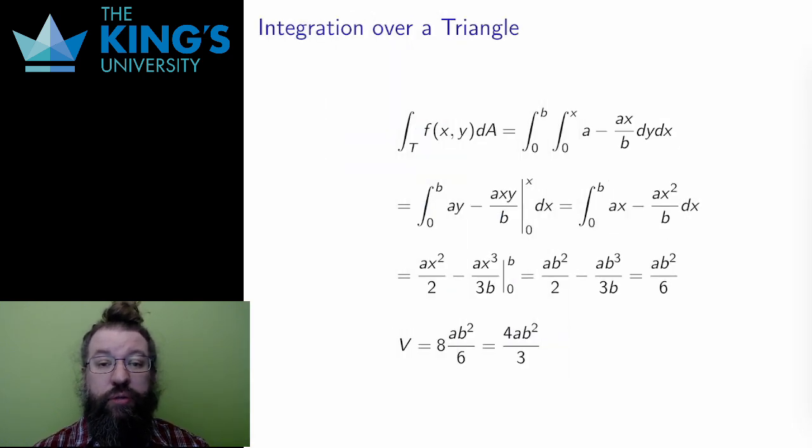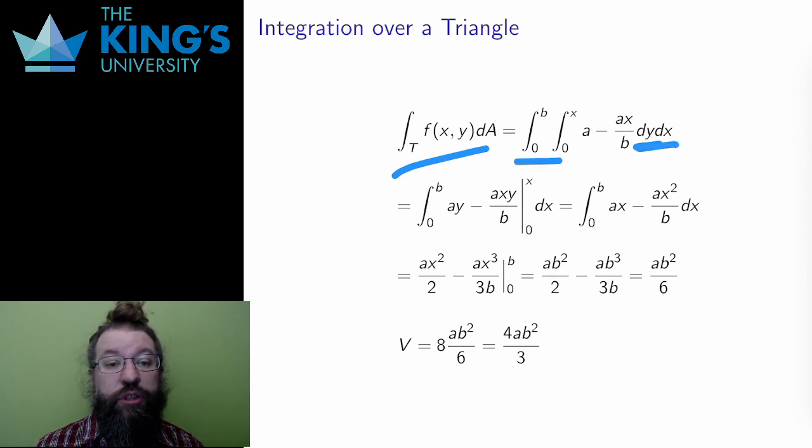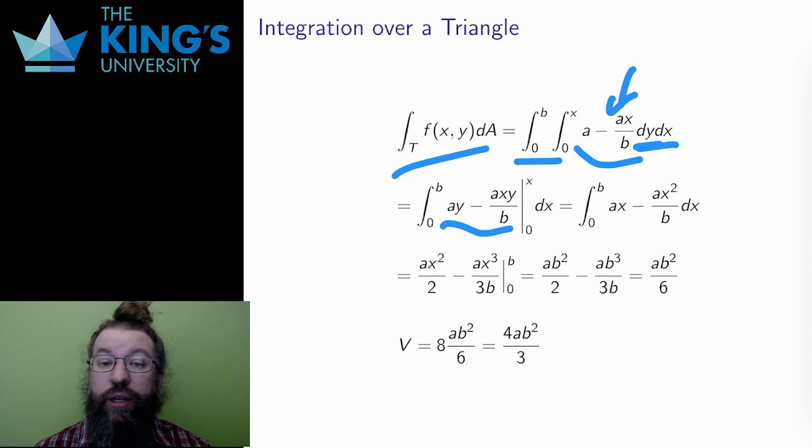So let me finish the calculation. I'll use the first version with constant bounds in x and variable bounds in y. I'll integrate in y, which produces ay minus axy over b because both terms are constant in y. Then I evaluate on the bounds, substituting x for y, and then with subtraction,